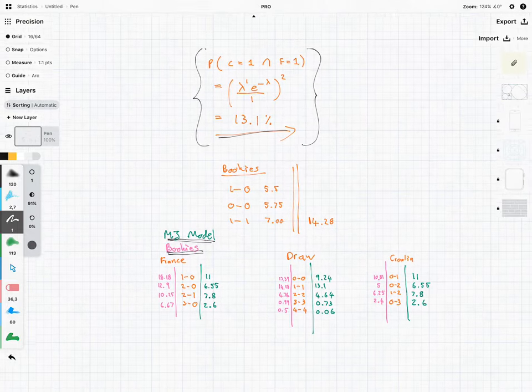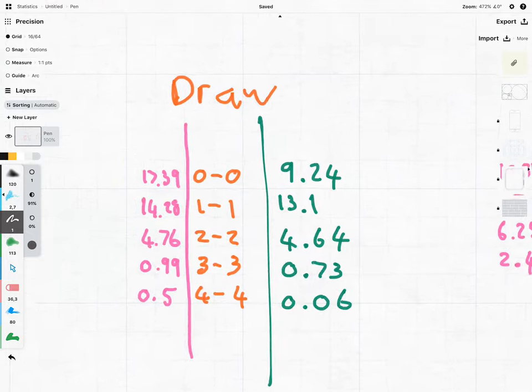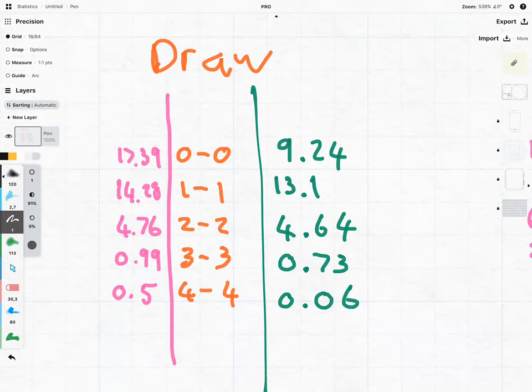And all I'm simply doing is using Poisson, very standard grade statistics here. But what was interesting is, if we look at the draws, the bookies think that a nil-nil draw is way more likely than what my model predicted. So they said 17% and I've said it's only going to be 9% chance.